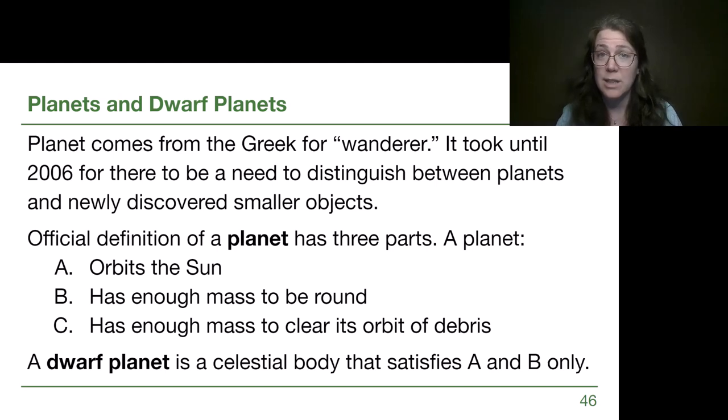The official definition has three different parts. A planet has to orbit the sun. The second piece of the definition is that the planet has to have enough mass to be round. If there's enough mass, gravity is strong enough to pull it into a ball. It's called hydrostatic equilibrium. Round isn't a coincidence shape. It is if you have enough stuff that is the shape you're going to have as a celestial body.